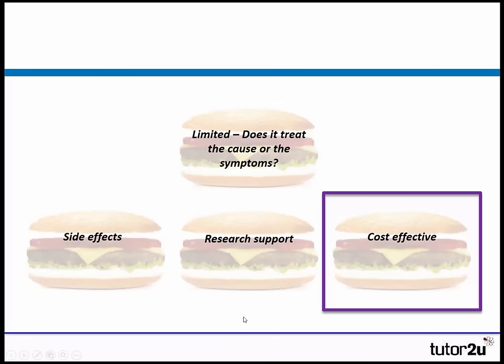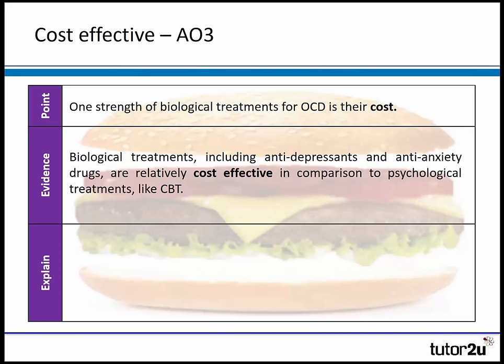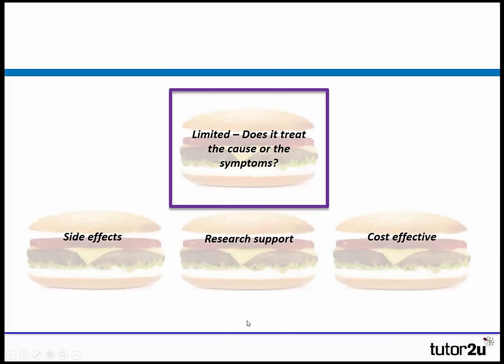A second evaluation point: are they cost-effective? A strength of biological treatments for OCD is their cost. Biological treatments including antidepressants and anti-anxiety drugs are relatively cost-effective, especially in the short term, in comparison to psychological treatments like cognitive behavioural therapy. This is beneficial for health service providers who can offer more treatments as money is saved.